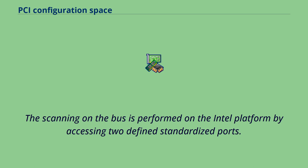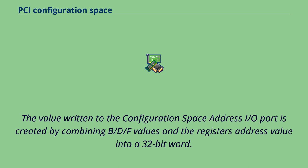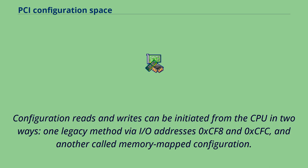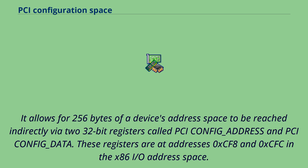Scanning on the bus is performed on the Intel platform by accessing two defined standardized ports: the configuration space address I/O port and configuration space data I/O port. The value written to the configuration space address I/O port is created by combining B/D/F values and the register's address value into a 32-bit word. Configuration reads and writes can be initiated from the CPU in two ways: one legacy method via I/O addresses 0xCF8 and 0xCFC, and another called memory-mapped configuration. The legacy method was present in original PCI and is called Configuration Access Mechanism. It allows 256 bytes of a device's address space to be reached indirectly via two 32-bit registers called pciconfig_address and pciconfig_data, at addresses 0xCF8 and 0xCFC in the x86 I/O address space.